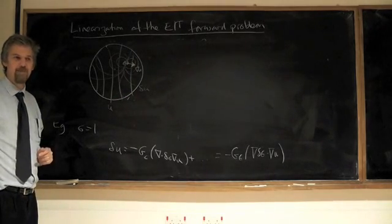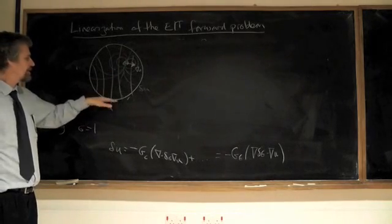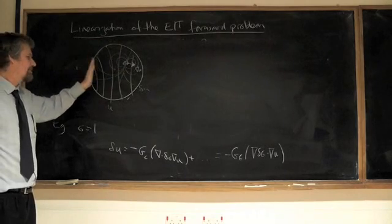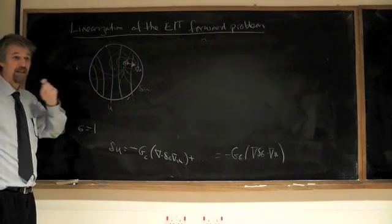So suppose we're doing this experiment in a lab, we've got a tank of salted water, we put a little object in there, we just look at the way the voltage actually, maybe du by dn, because we fixed the voltage, changes on the boundary.